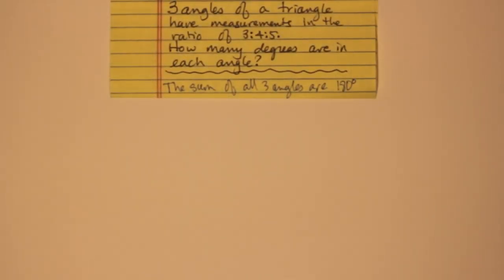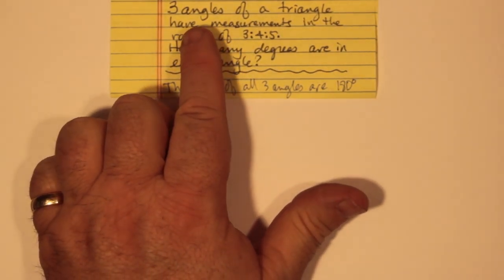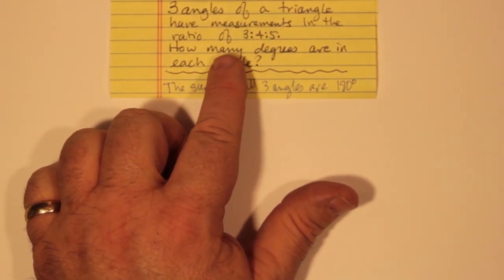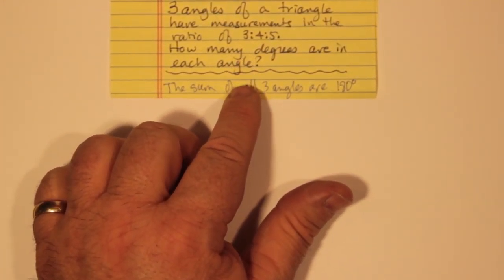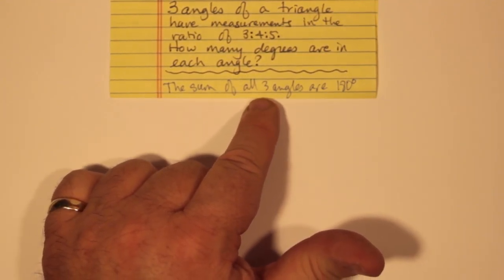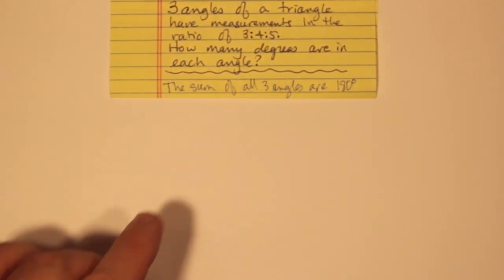So we have another problem here where three angles of a triangle, we don't know the angles, but they have measurements in the ratio of 3 to 4 to 5. How many degrees are in each angle? And of course you're given that the sum of all three angles are 180 degrees, which you should already know.